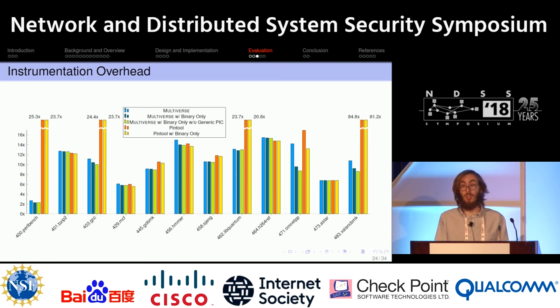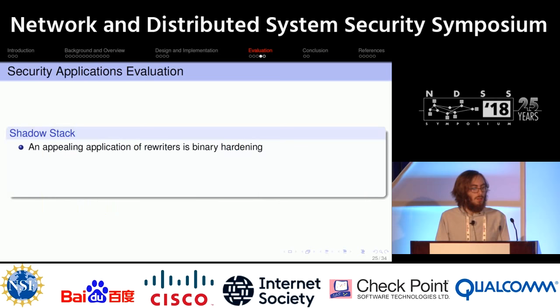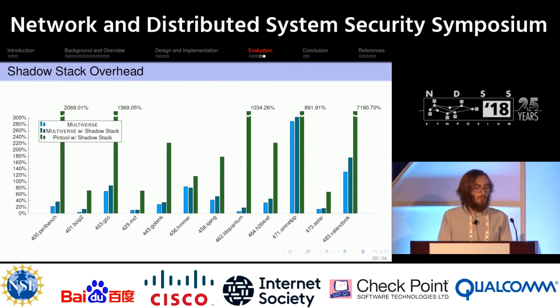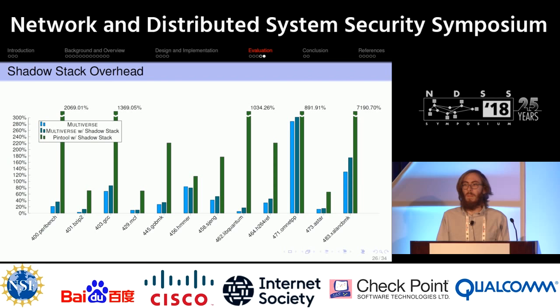Instruction counting, while nice, is not the most practical example. So we implemented an actual security application: backward edge CFI with a shadow stack, and compared it again with Pin. The results are similar to the previous: overhead from Pin is fairly high. The assembly we inserted for Multiverse gave us much better performance. There are details in the paper about the specific shadow stack implementation.